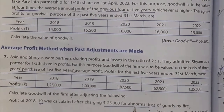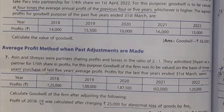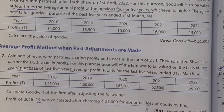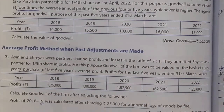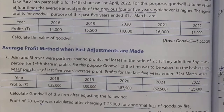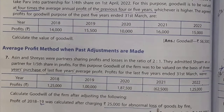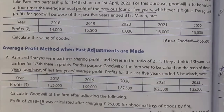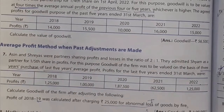Here we have an abnormal loss. If there is an abnormal loss, then we will add it back. If there is an abnormal gain, then we will subtract it. Here we have an abnormal loss, so we will add it back.